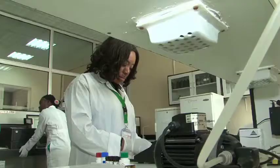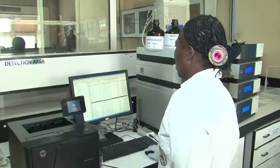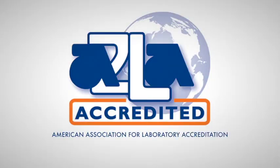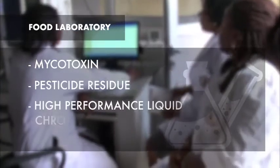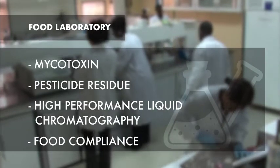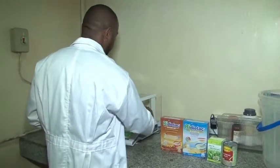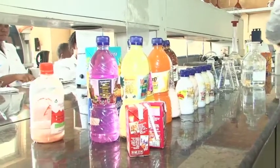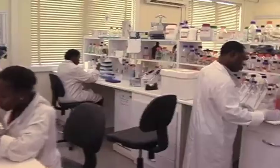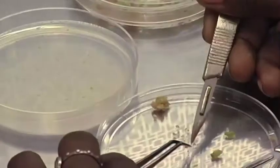NAFDAC retooled and upgraded its laboratories to international standards. These laboratories attained ISO 17025 accreditation by the American Association of Laboratory Accreditation, and include mycotoxin, pesticide residue, high-performance liquid chromatography, and food compliance labs. This is to ensure that food products produced, imported, and exported are of good quality and safe from contaminants, especially aflatoxin. The agency is also collaborating with research institutions to control aflatoxins.